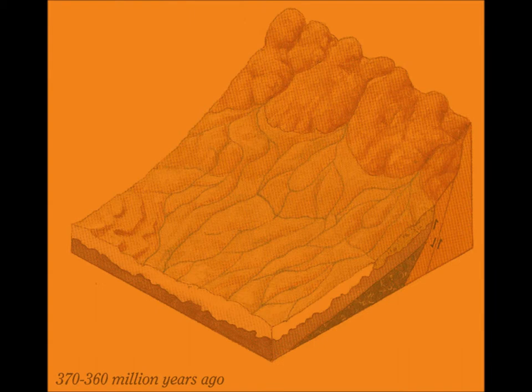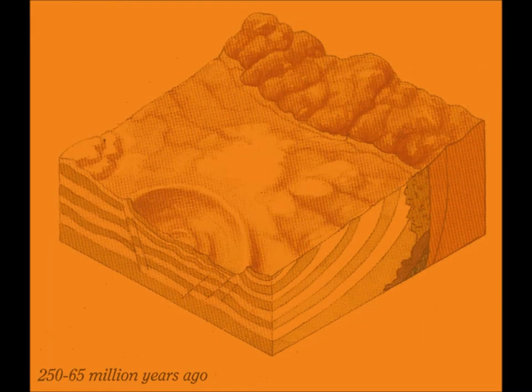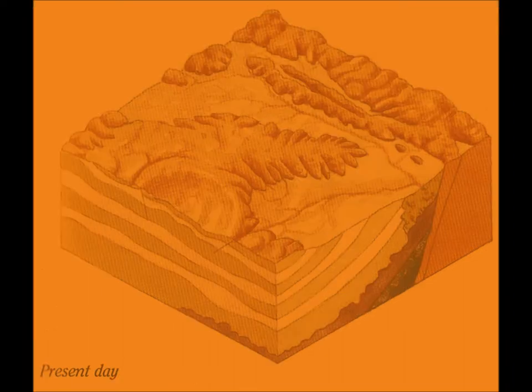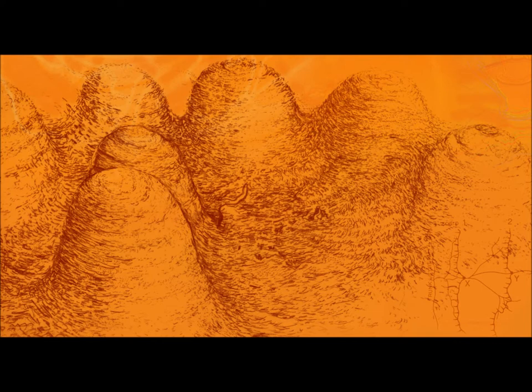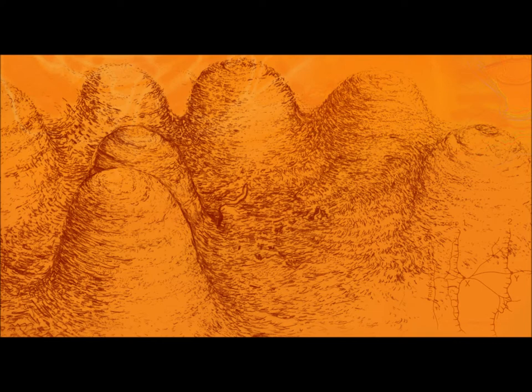In these diagrams, which I include within the artwork, we can see what the region would have looked like: firstly, 370 to 360 million years ago, and then following that, 250 to 165 million years ago, and, of course, the present day. The sandstone that makes up the beehive formations was laid down by ancient riverbeds forming the sedimentary layering in the sandstone.